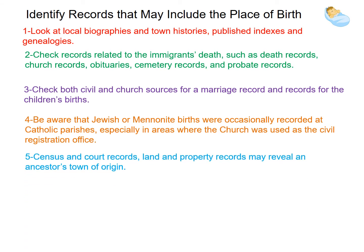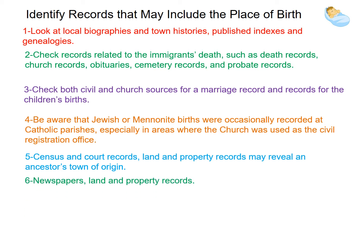Census and court records, land and property records may reveal an ancestor's town of origin. Newspapers, obituaries, and public and ethnic newspapers are often the most likely place to contain information such as a town of origin.